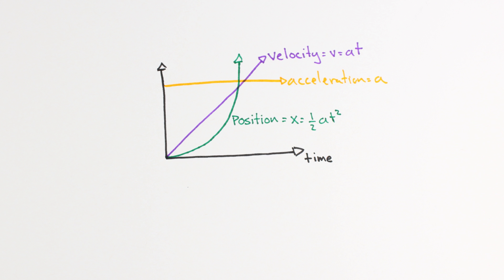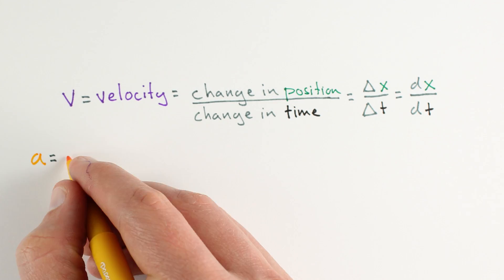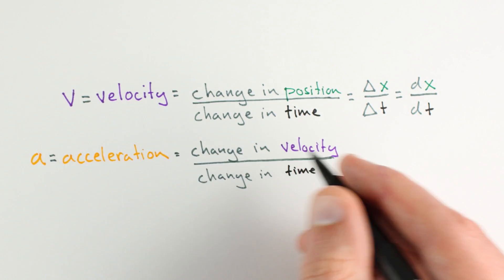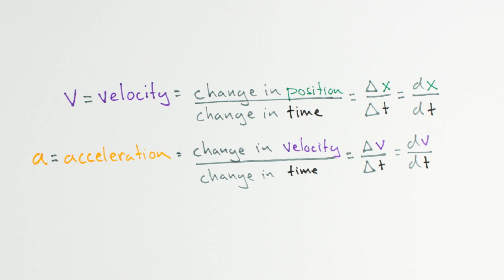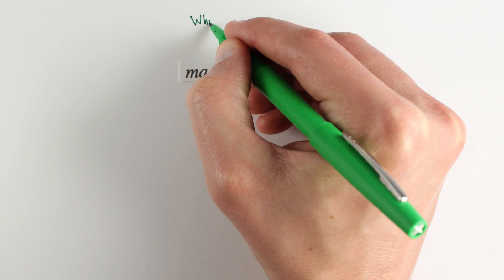Velocity is how much an object's position changes in a given amount of time, and acceleration is how much an object's velocity changes in a given amount of time. We can write these mathematically in a few different ways. The important part for us is that for a given position of our mass,